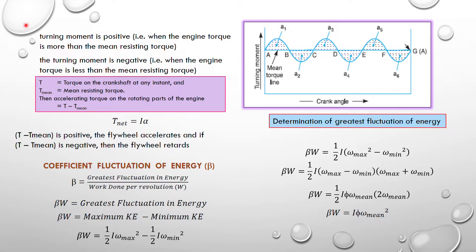The turning moment is positive when the engine torque is greater than the mean resisting torque, and negative when the engine torque is less than the mean resisting torque line. For example, area A1 — where engine torque is greater than the mean resisting torque — is a positive amount of energy. This excess energy is stored in the flywheel.